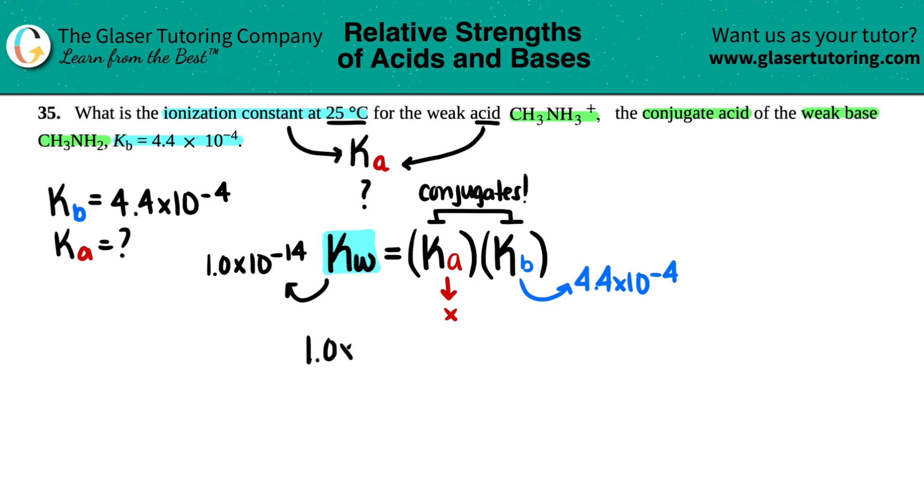Now we could just plug it all in. 1 times 10 to the negative 14th equals, let's see. So we're just going to say X, right, times 4.4 times 10 to the negative 4th. We know how to go about this. Solve for X. We got to just divide on both sides by the 4.4 times 10 to the negative 4th, and that's it.